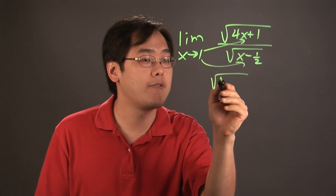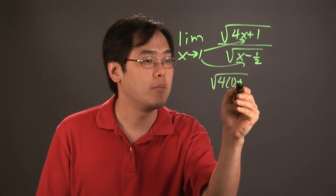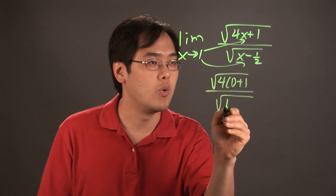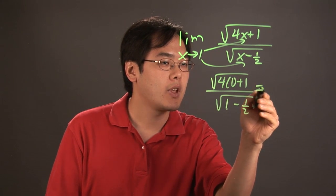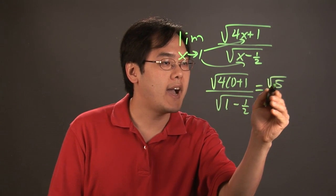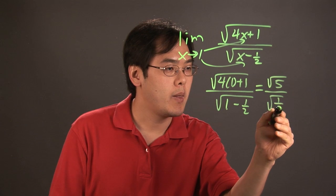So you have square root of 4 times 1 plus 1 over square root of 1 minus 1 half. So at this point you have square root of 5 over square root of 1 half.